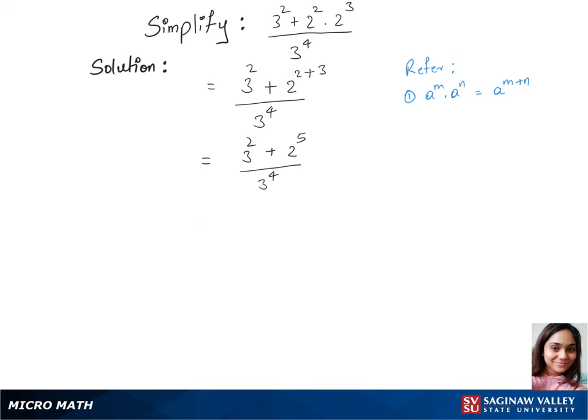Now let's write 3 squared as 9, plus 2 to the power 5 as 32, over 3 to the power 4 as 81. We'll add this up now. So 9 plus 32 is 41 over 81. This is our final answer.